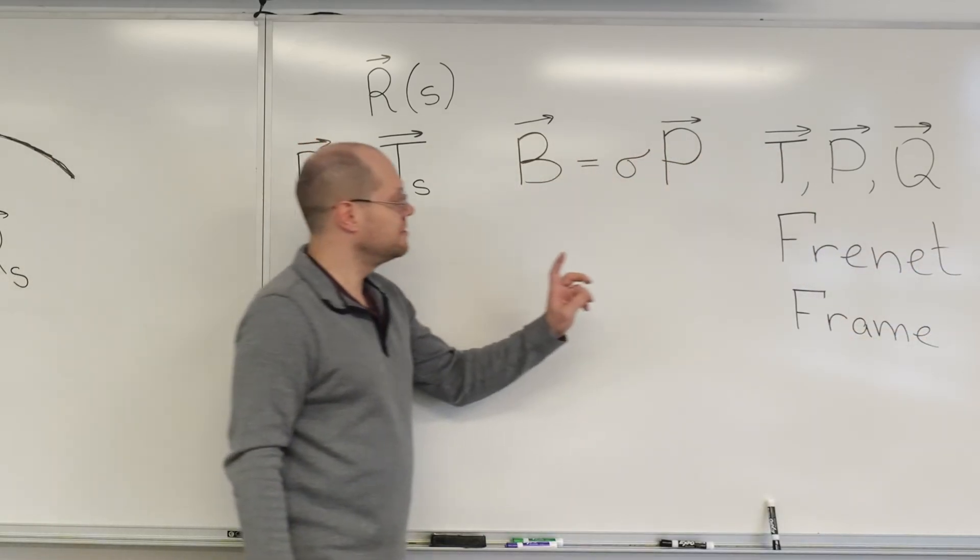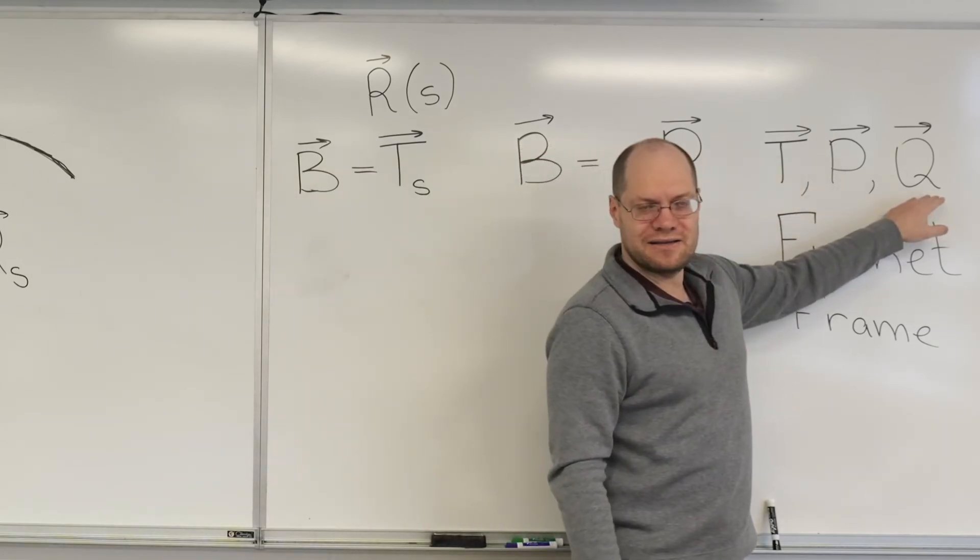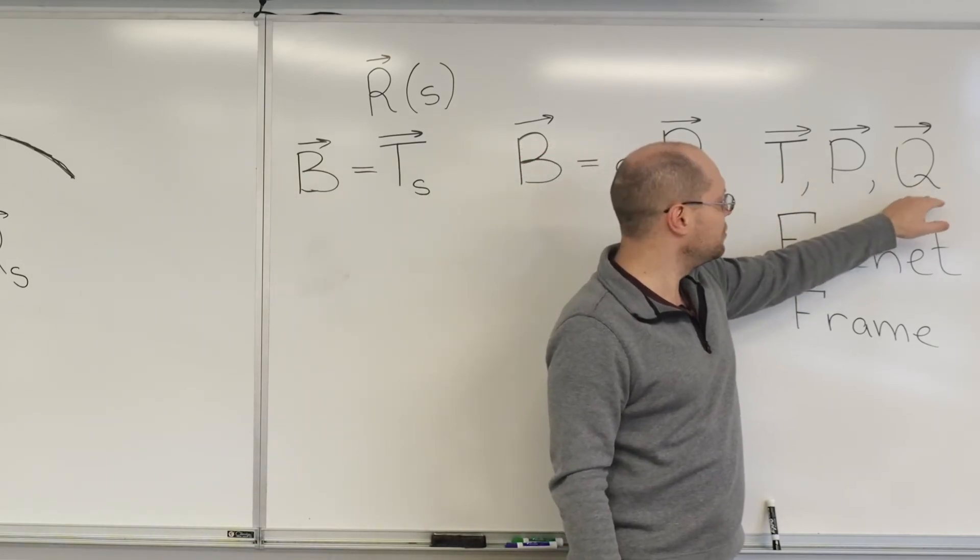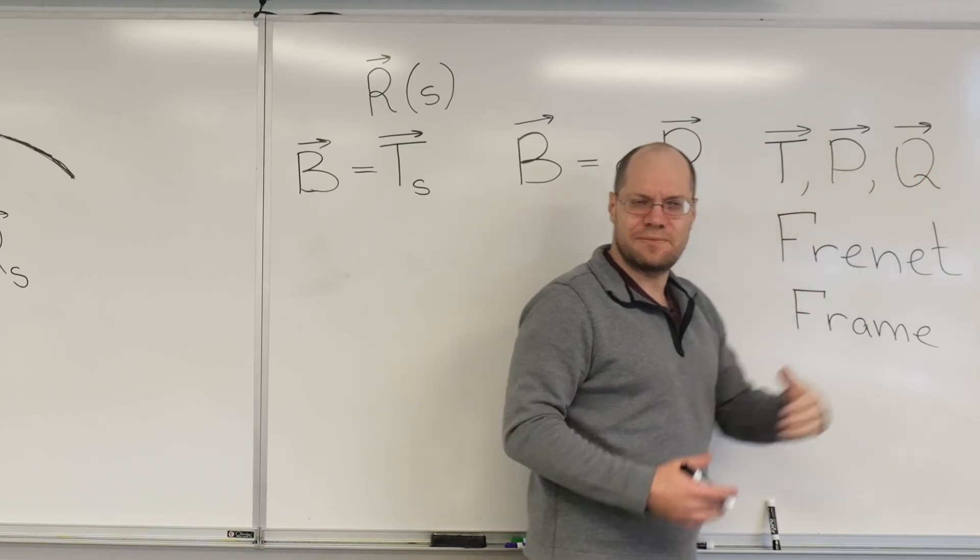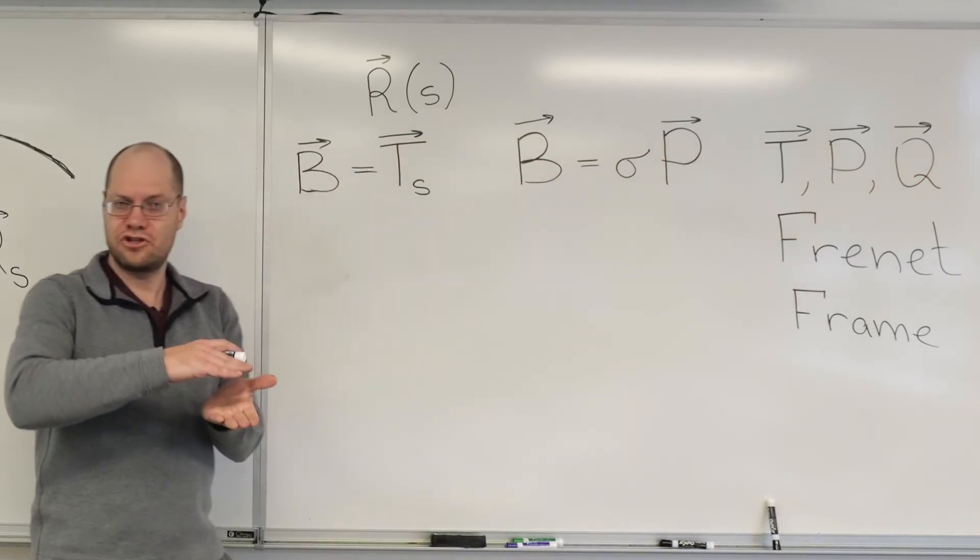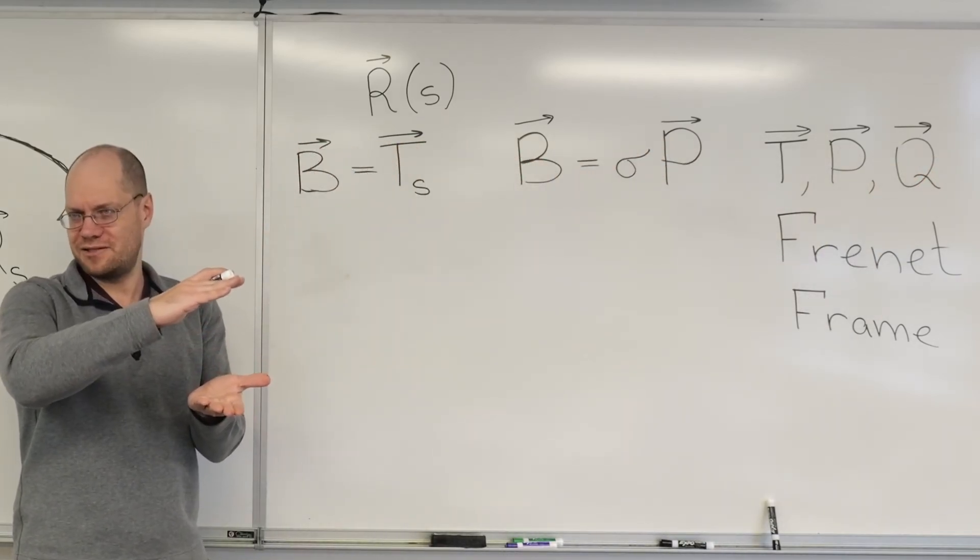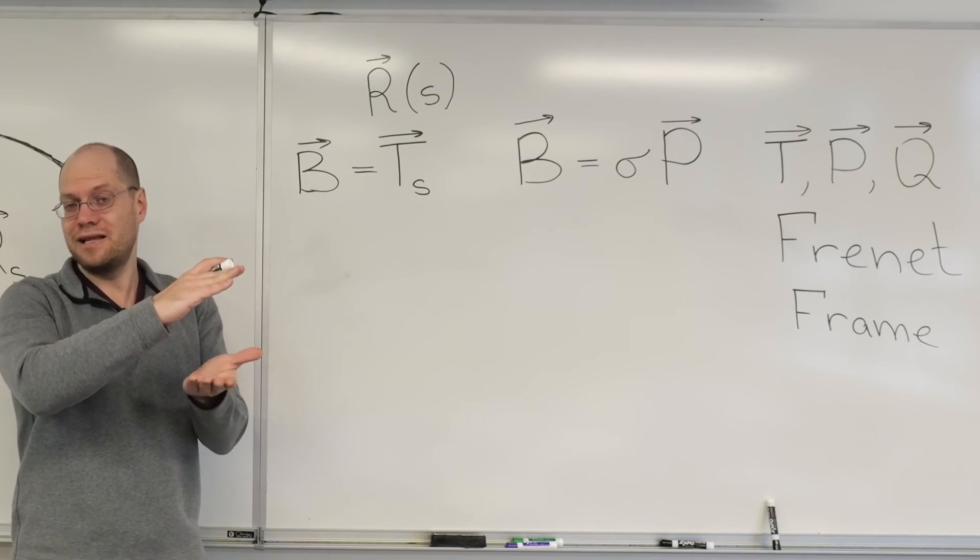Okay, but just defining this quantity, Q, this vector Q, doesn't tell us about the rate in which the curve is twisting out of its instantaneous plane. So we'd like to measure that.